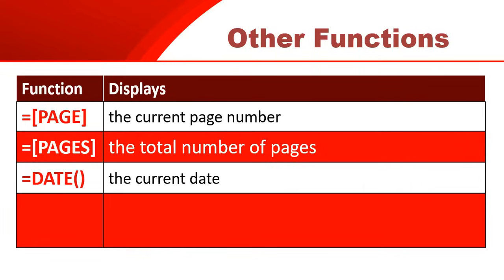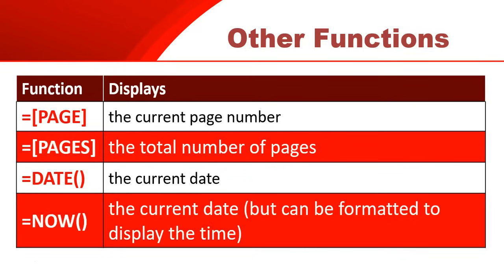Maybe you want to put the date in, so you can say equals Date() — with round brackets, not square brackets — and that will get you the current date, very similar to what we've done in forms. If you want to use Now(), that will give you the current date and time, and you can format it to display just the time or just the date. So those are the functions you would use in a page header or footer — not the aggregate functions.